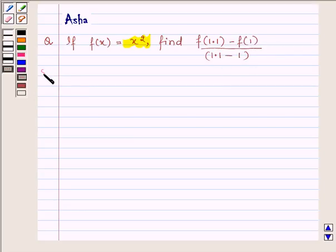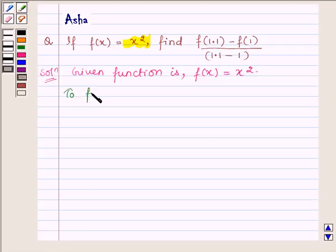So let us start with the solution. The given function is f(x) equals x square and we are required to find the value of f(1.1) minus f(1) upon 1.1 minus 1.